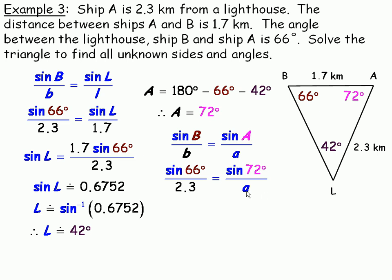And we cross-multiply to find side A. Side A would be the product of 2.3 and sine 72 degrees, divided by sine 66 degrees. And that works out to be about 2.4 kilometers. So, this side is 2.4 kilometers. And that's the whole triangle solved.